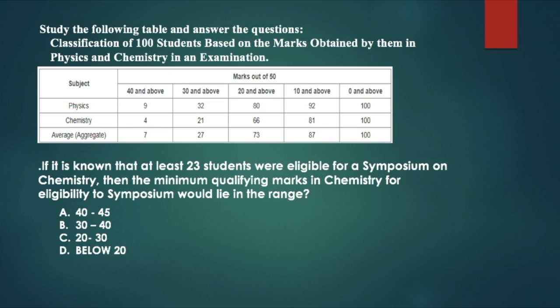Last question. If it is known that at least 23 students were eligible for a symposium on chemistry, then the minimum qualifying marks in chemistry for eligibility to symposium would lie in which range? This is a very good question. It has been told that at least 23 students were eligible for a symposium, so what qualifying marks would be required for eligibility? We have to see that at least 23 students are in which range. Now if we look at 30 and above, there are 21 students in chemistry. That means if there is 30% as the eligibility limit, then 21 students will qualify for the chemistry symposium. But in reality, 23 students have been eligible, that means it is below 30.